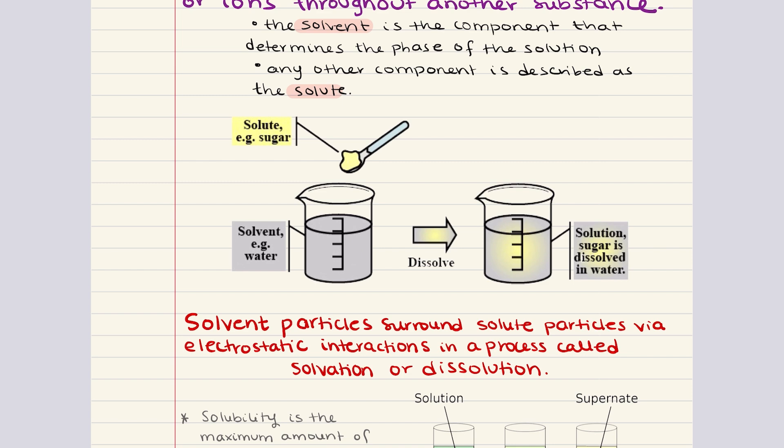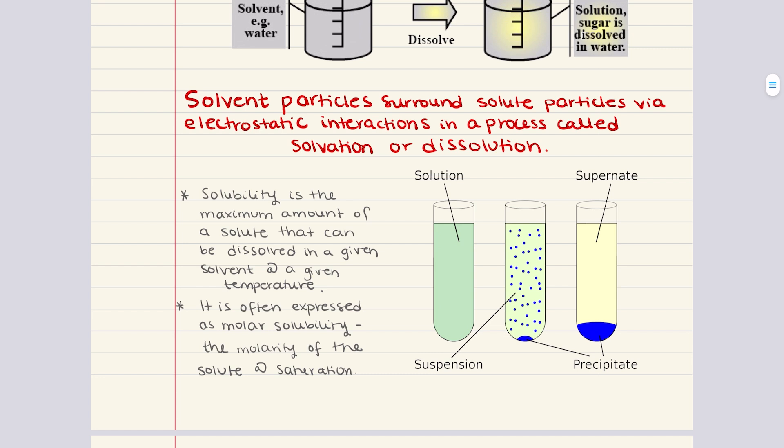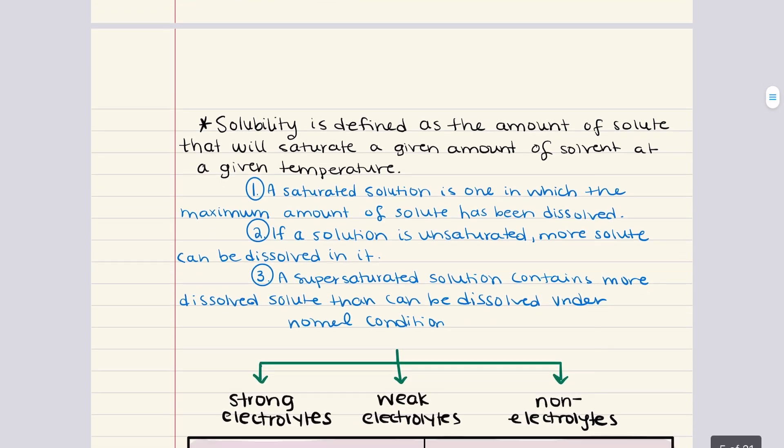Now, the next thing we want to discuss is solubility. Solubility is a measure of how much solute can be dissolved in a given amount of solvent at a specific temperature. So, it represents the maximum concentration of a solute that can be achieved in a solvent under given conditions. Now, solubility depends on various factors, including temperature, pressure, and the nature of both the solute and the solvent. And we're going to get into that in objective three. But for now, let's cover the types of solutions based on solubility.